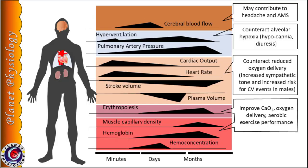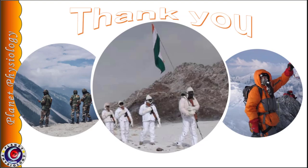Immediate adaptive responses to high altitude include hyperventilation, increase in pulmonary arterial pressure, and increase in heart rate and cardiac output, while stroke volume decreases. After a few minutes to hours, there is increase in cerebral blood flow, decrease in plasma volume, and stimulation of erythropoiesis. Long-term effects include increase in muscle capillary density, polycythemia and improved work capacity. Thank you for watching and see you in the next video.